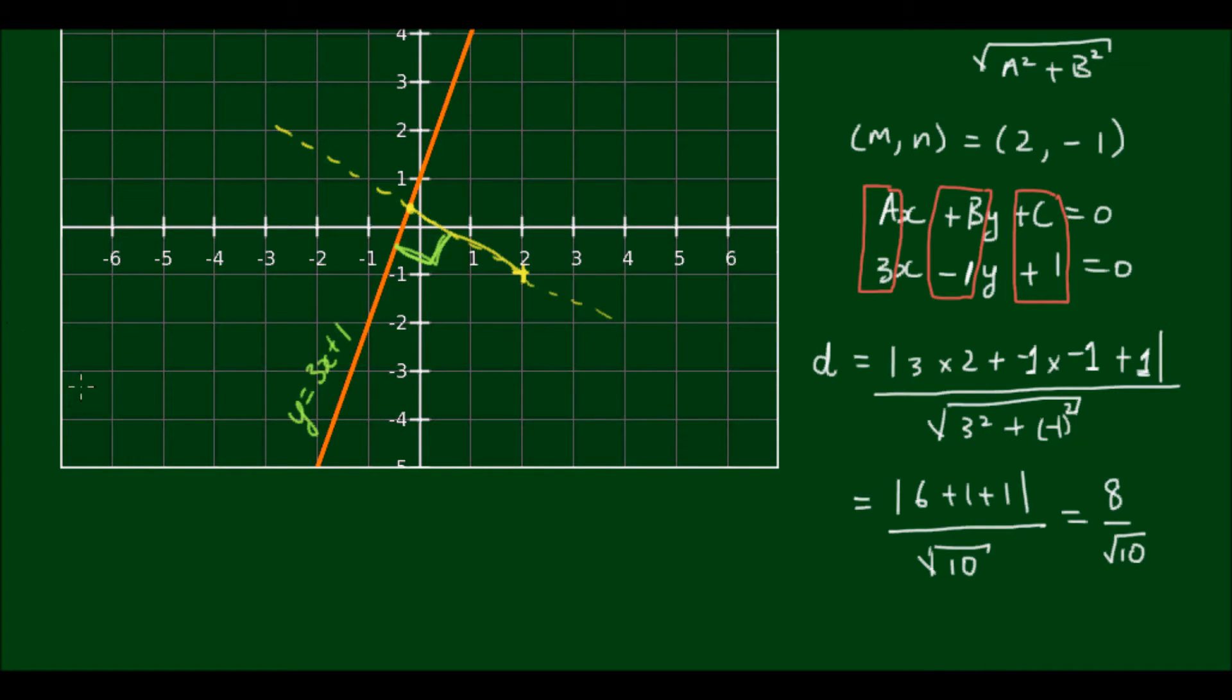And this value is the distance from the point (2, -1) to the line y equals 3x plus 1.